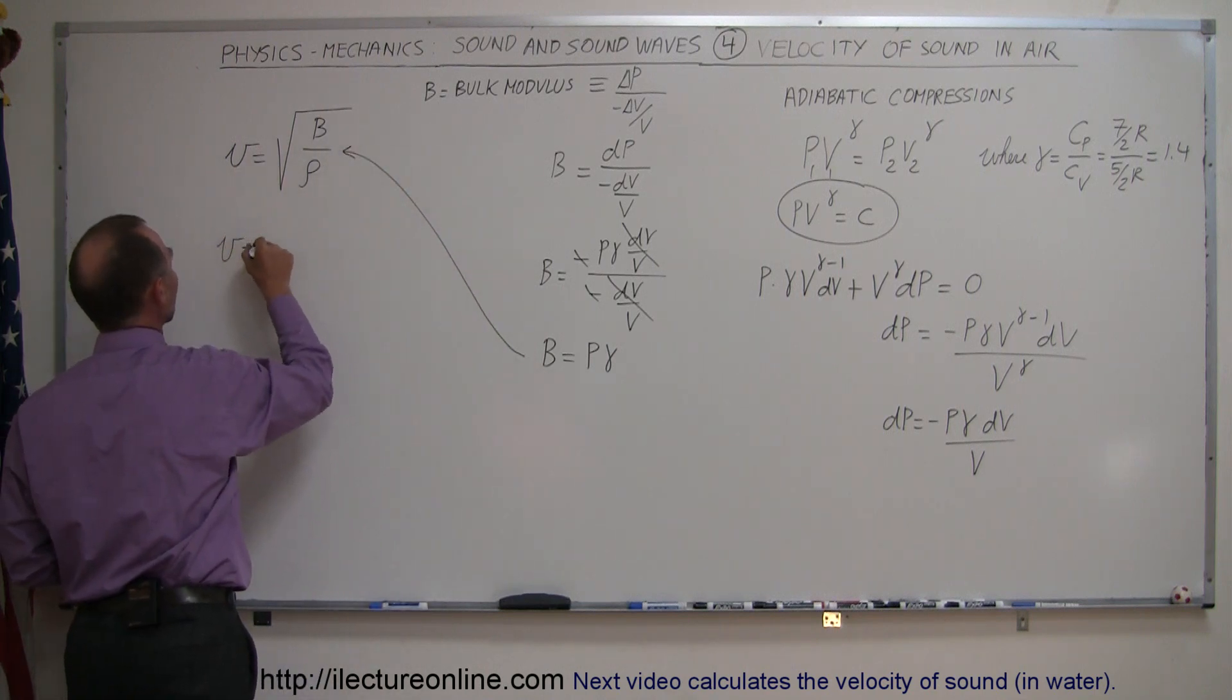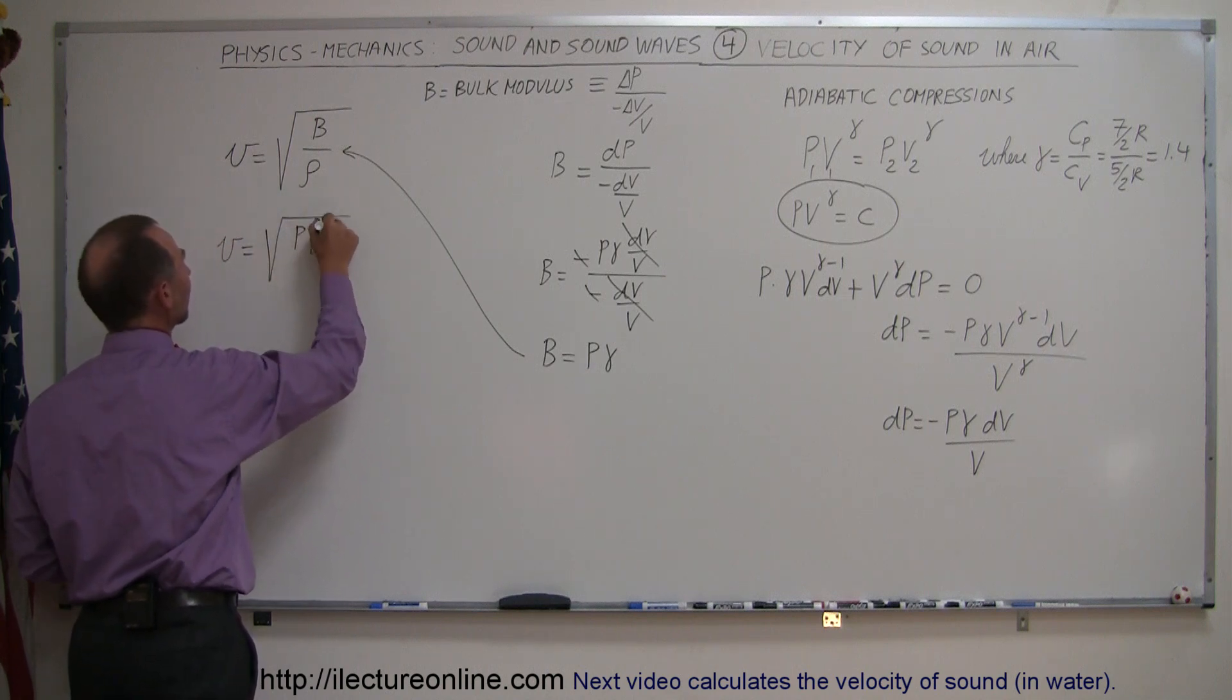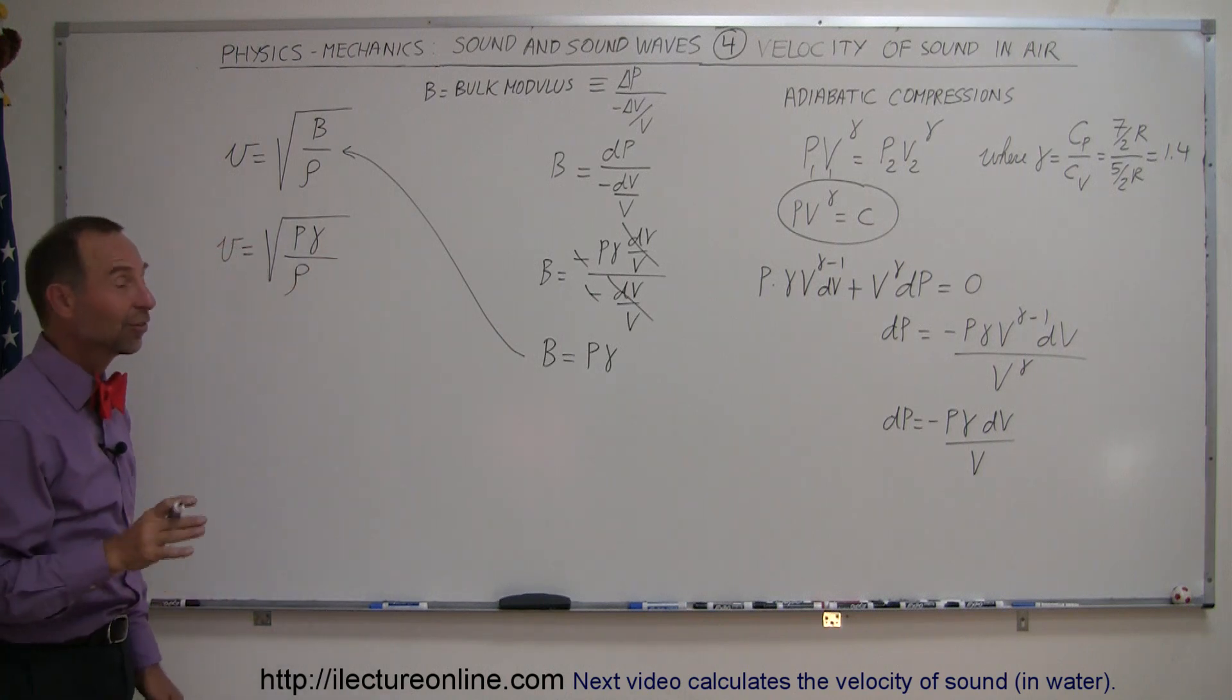we can see that the velocity of sound in air is equal to the bulk modulus, which is the pressure times the gamma, divided by the density of the air. Now let's plug in all the numbers and see what we get.